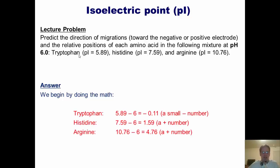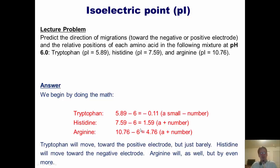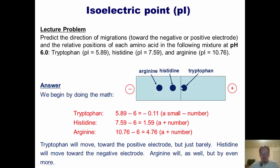So here we go. Once again we begin by doing the math. The difference between tryptophan's isoelectric point and the pH is negative 0.11, which is a small negative number. Between histidine's, 1.59, a positive number. Between arginine's, 4.76, a positive number. What does that mean? It means that tryptophan will move toward the positive electrode, but just a tiny amount, because it's got this small negative number. Histidine will move toward the negative electrode. Arginine will as well, but by an even larger amount than histidine.